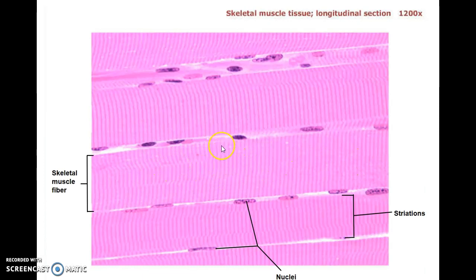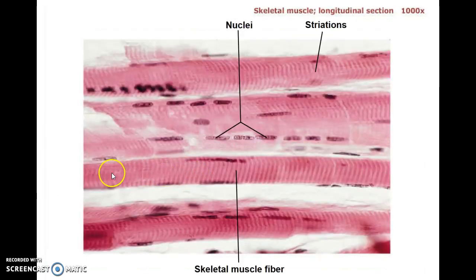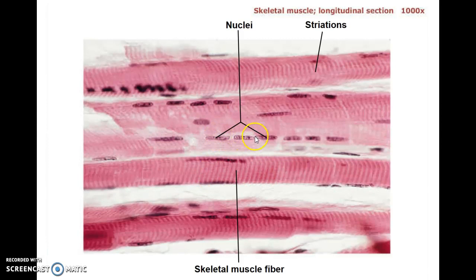Where they all line up, you'd have a whole bunch of myosins lined up and then a whole bunch of actins, a whole bunch of myosins, a whole bunch of actins in series like that, creating the striations. Here's another skeletal muscle cell with a slightly different stain — you can nicely see the striations and lots of nuclei on the surface.